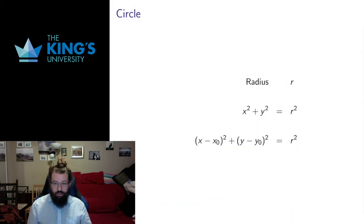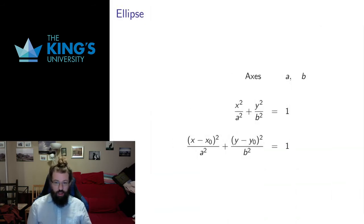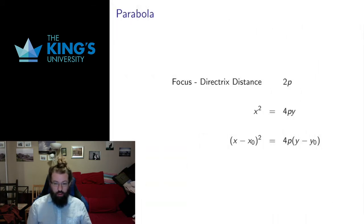Very briefly we have four standard types of conics. Circle has one parameter which is radius, has a centered form and then I can shift that to wherever I want in the plane. The ellipse is determined by the length of two axes that show up in the denominators of its equation. I can shift that equation anywhere in the plane as well. I'm not going over these in too great of detail. I just want to remind you what the general types are.